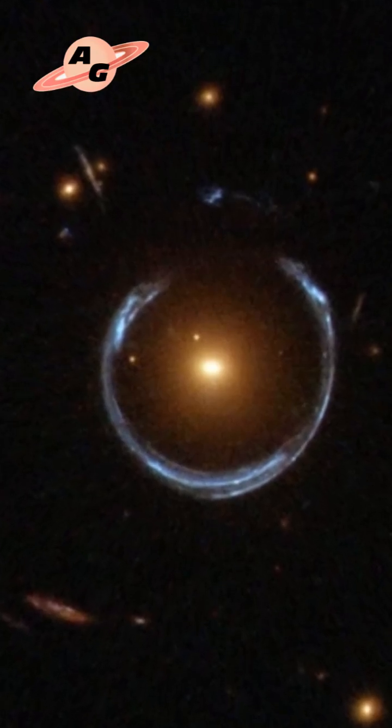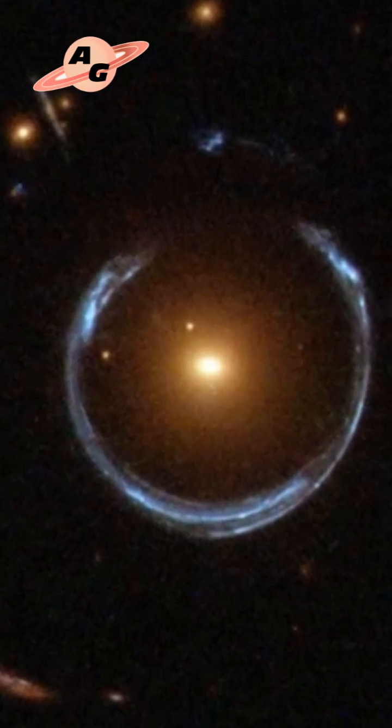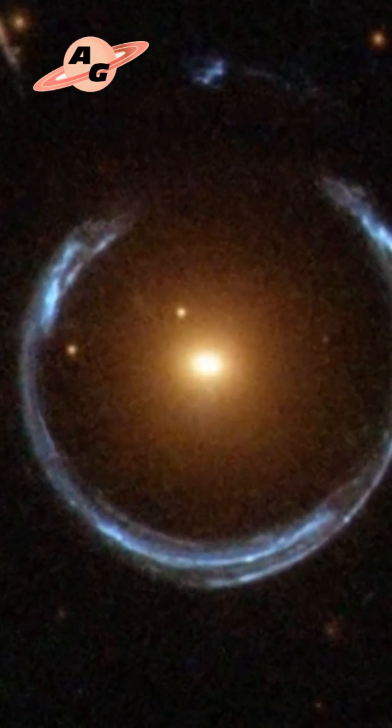The galaxy acting as the gravitational lens, however, is a massive elliptical galaxy, classified as a rare class of galaxies called red luminous galaxies, as they emit exceptionally intense infrared light.